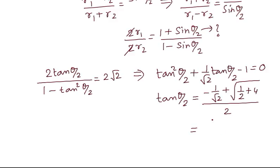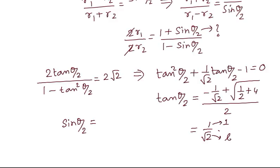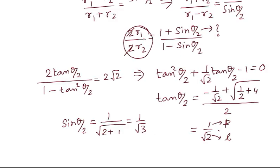tan(θ/2) takes a positive value, which comes out to be 1/√2. Since tan(θ/2) = 1/√2, the perpendicular is 1 and the base is √2, so the hypotenuse is √(1² + (√2)²) = √3. Therefore sin(θ/2) = perpendicular / hypotenuse = 1/√3.